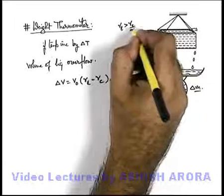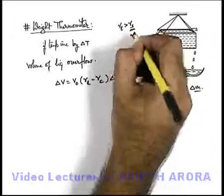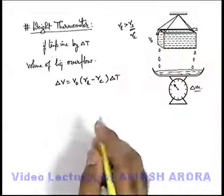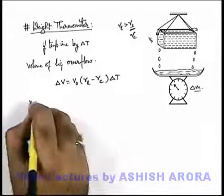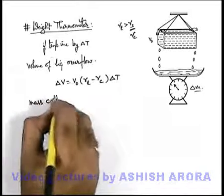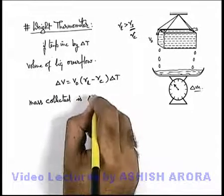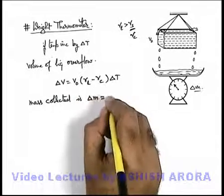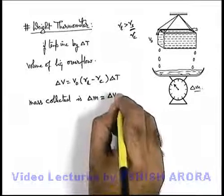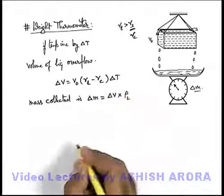Here I have written gamma s, it can be taken as gamma c, gamma of container. And if mass collected in the weighing machine is delta m, then this delta m can be written as the volume overflow multiplied by the density of liquid.